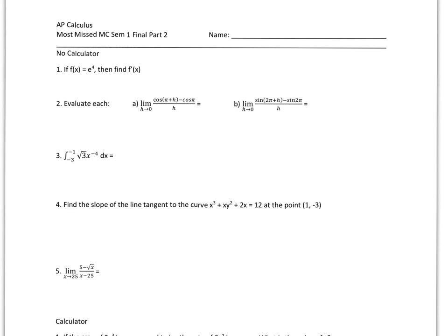For number one, it says if f of x equals e to the fourth, then find f prime of x. So basically what this is right here is just a constant. So if I'm finding f prime of a constant, that's just zero.